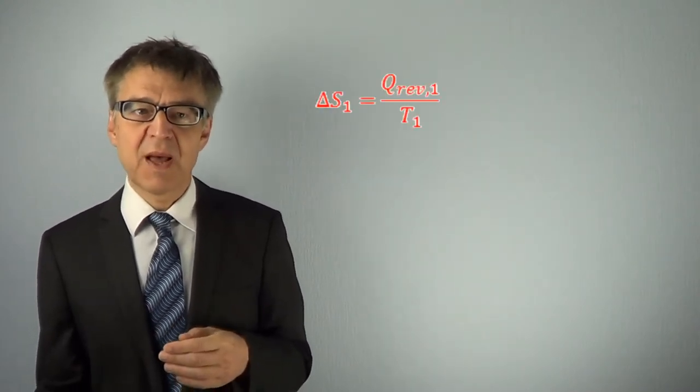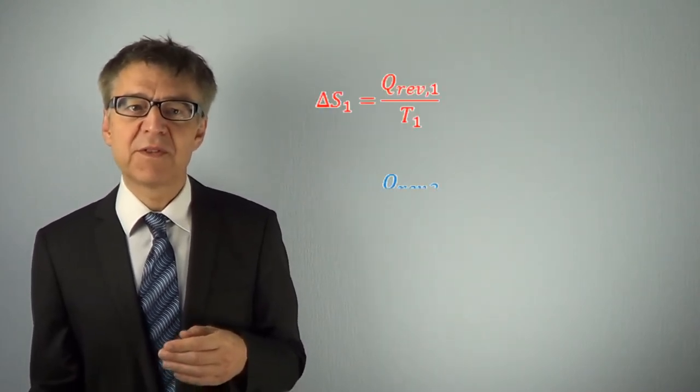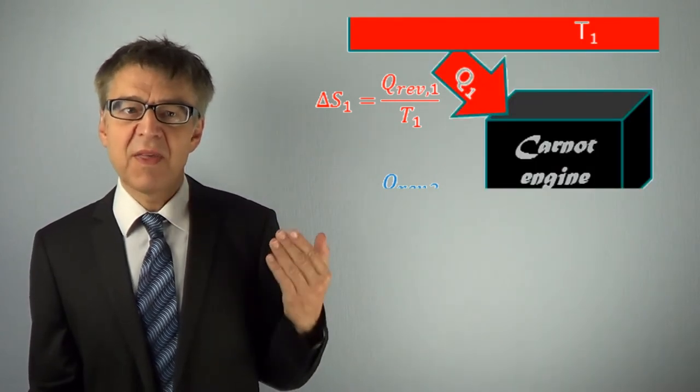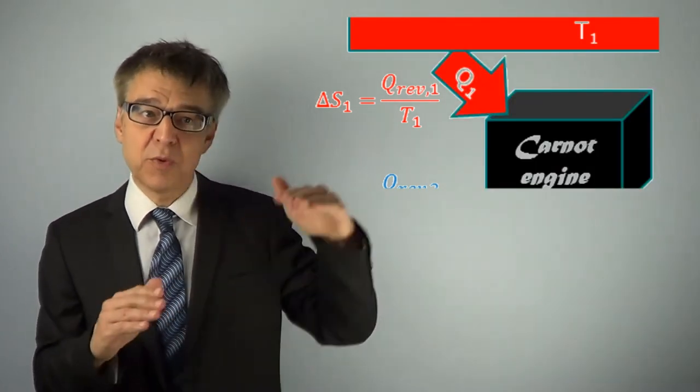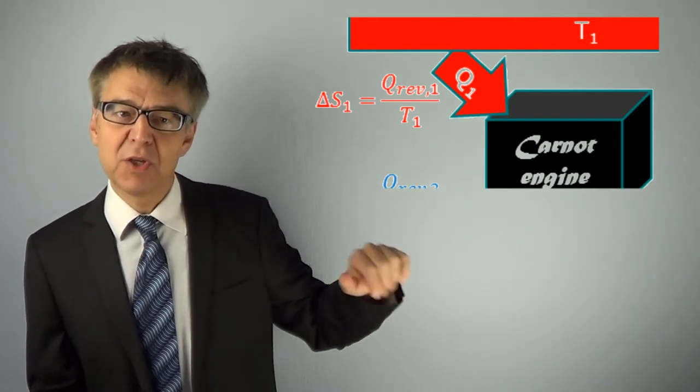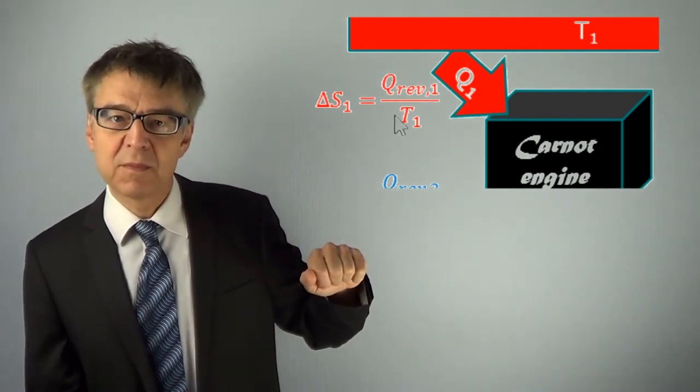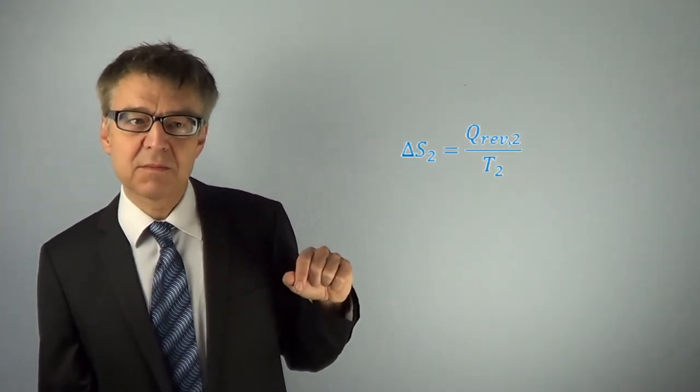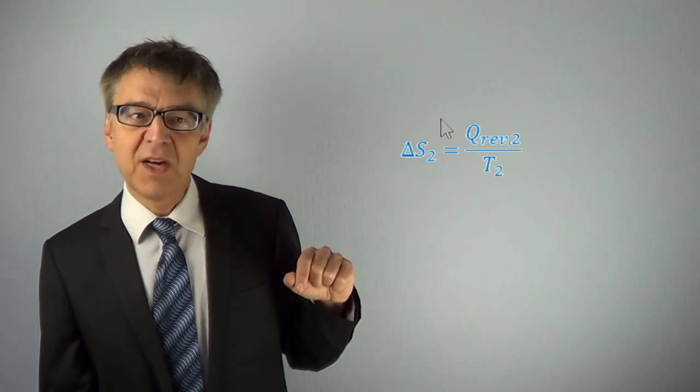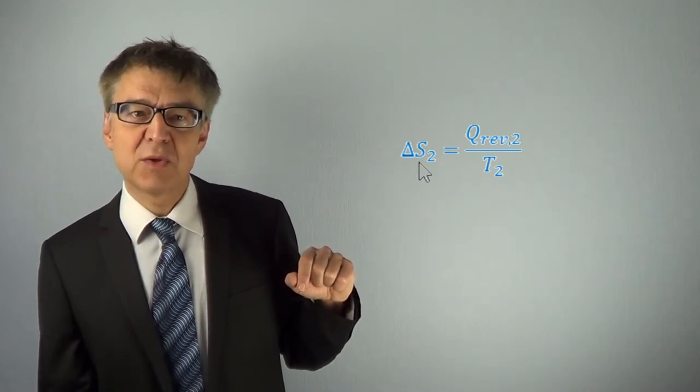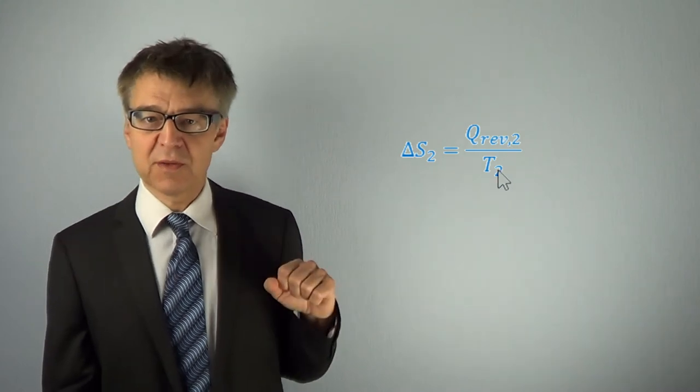The hot temperature reservoir gives off heat, which means the entropy of this reservoir decreases by the amount Q1 over T1. In temperature reservoir T2, entropy increases. Entropy change delta S2 equals Q2 over T2.